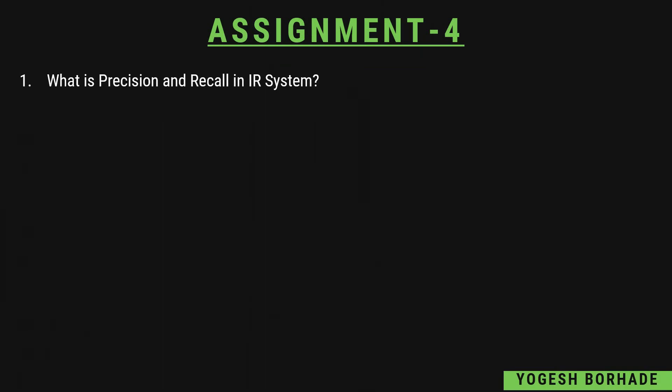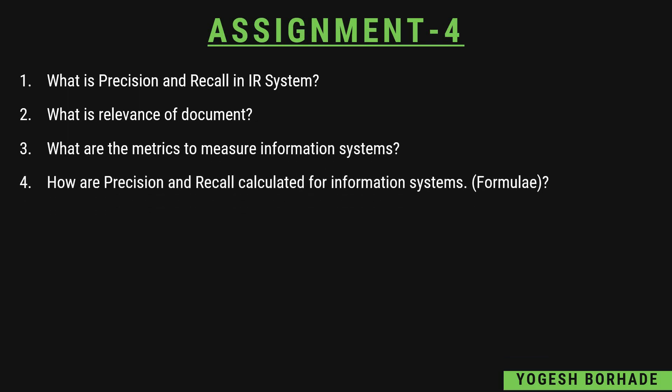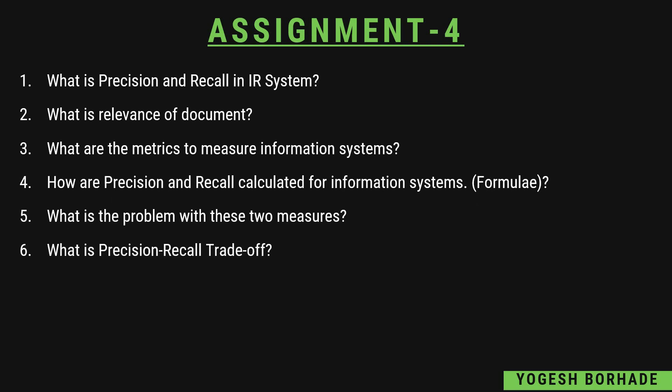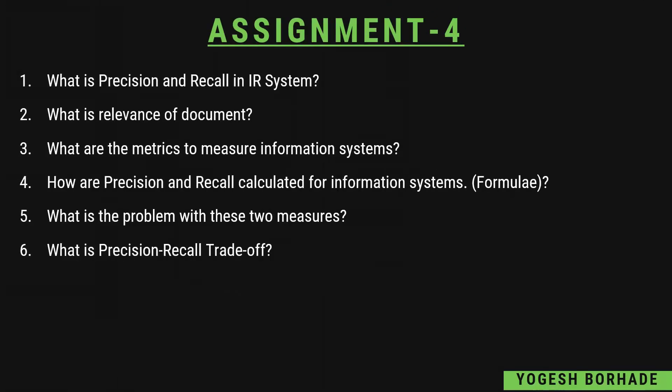Assignment four is based on precision and recall. You need to know what precision and recall are in an information retrieval system, what is the relevance of a document, and what are relevant and non-relevant documents. Also prepare what are the metrics to measure an information system, how precision and recall are calculated and their formulas, what is the problem with these two measures, and what is the precision-recall trade-off — how increasing or decreasing one affects the other.